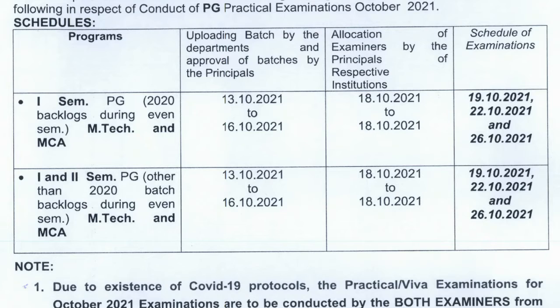For these exam dates, colleges need to submit their batch allocation by 13th, 16th, and 18th of October. The college should complete the batch allocation and send the batch list to the VTO.